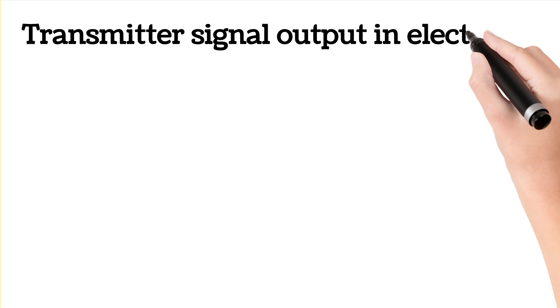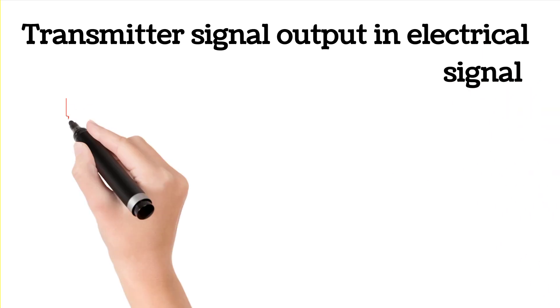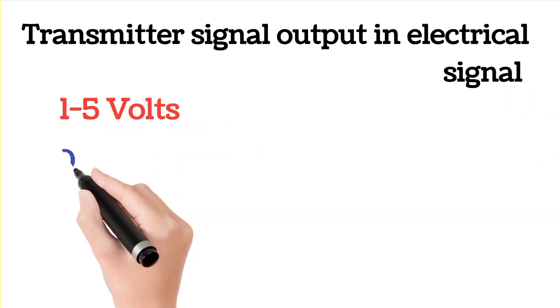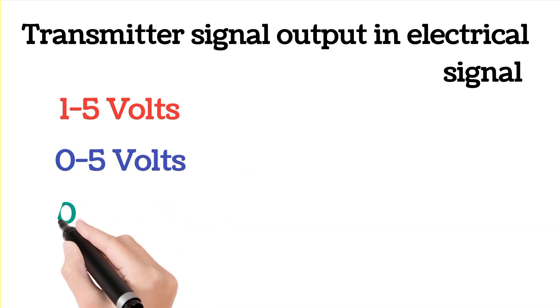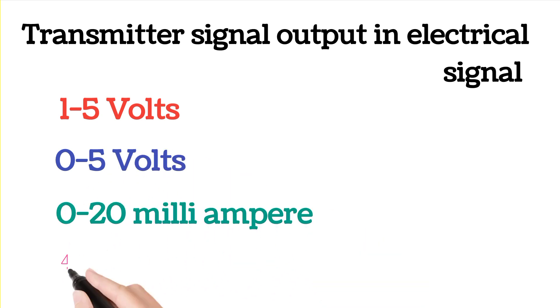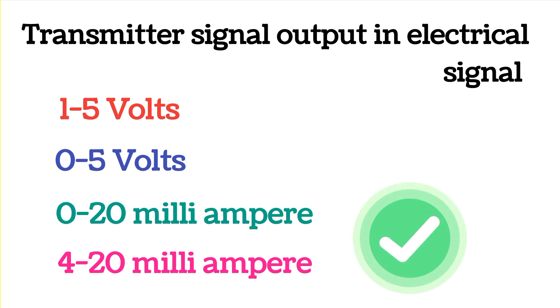We have discussed earlier that transmitter output is an electrical signal. Now following may be the electrical output signal types: 1 to 5 volts, 0 to 5 volts, 0 to 20 milliampere, 4 to 20 milliampere. 4 to 20 milliampere is the most commonly used standard used by the industries.